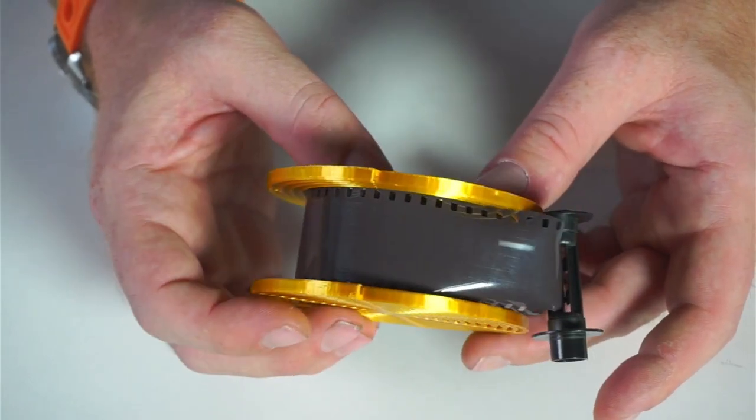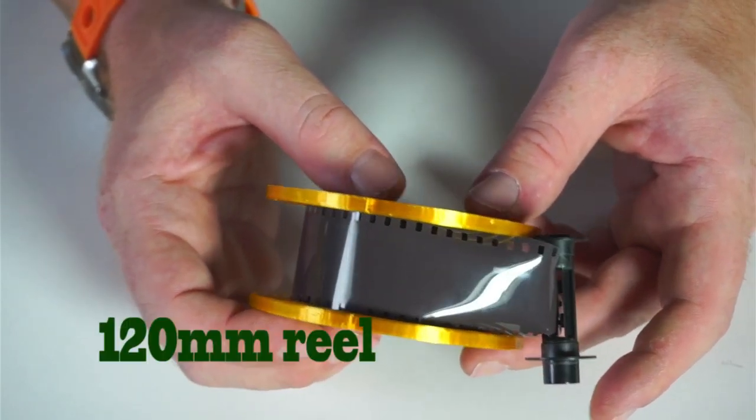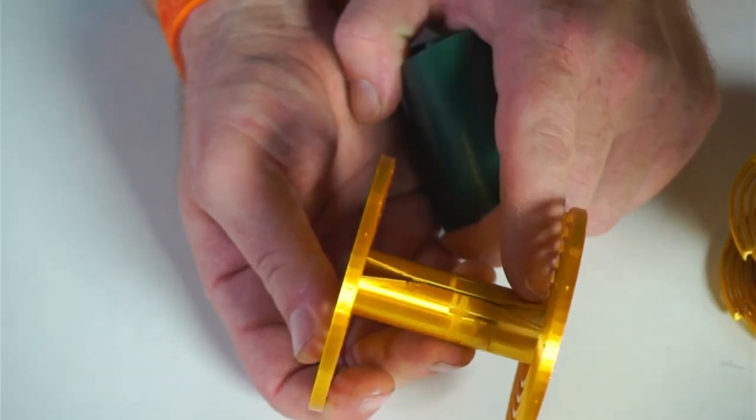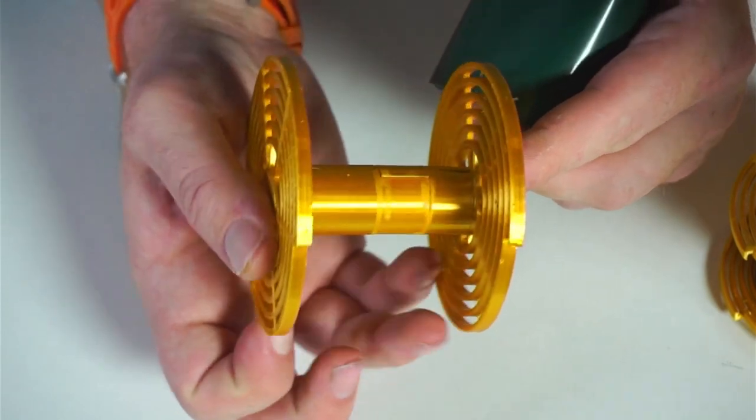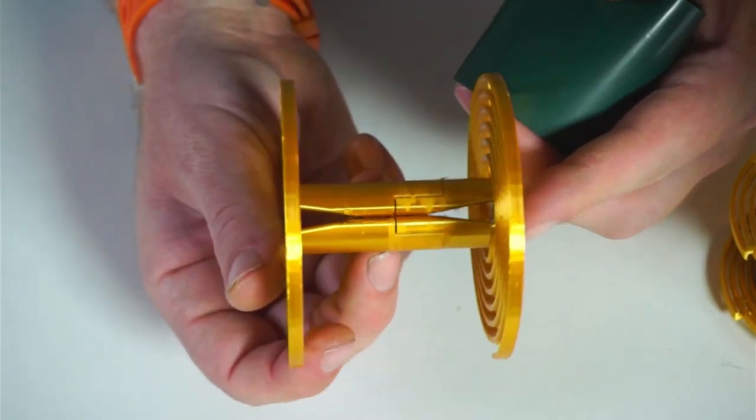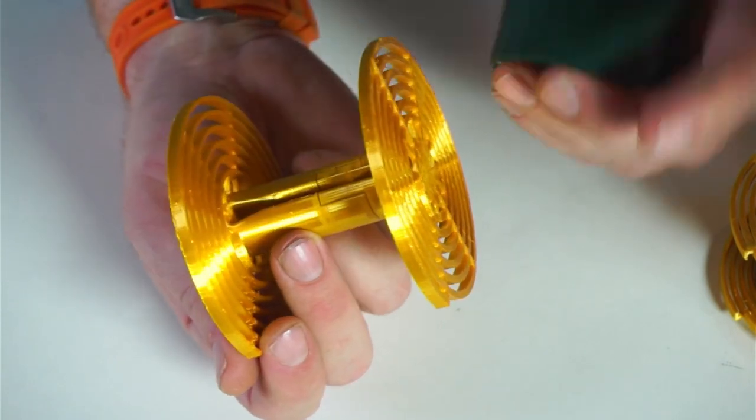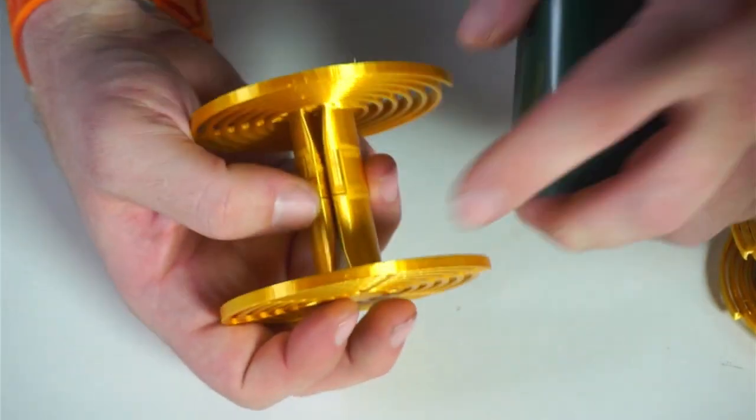Let's take a look at how to load a 120 reel. So the 120 reel has a closed slit side and then an open slit side. We're going to load it from the open slit side and note which direction the spiral is going. And we're going to load it that way.